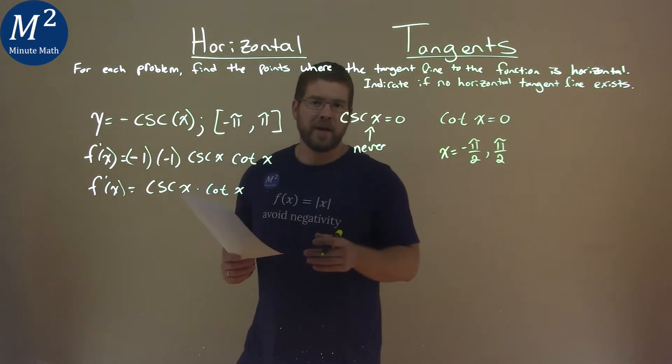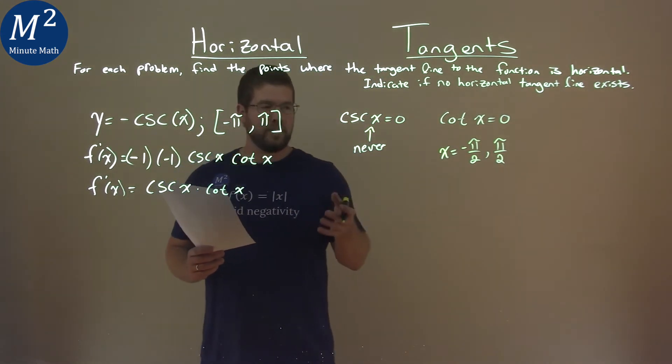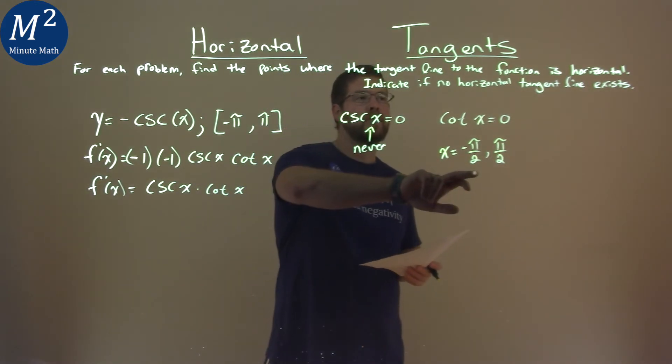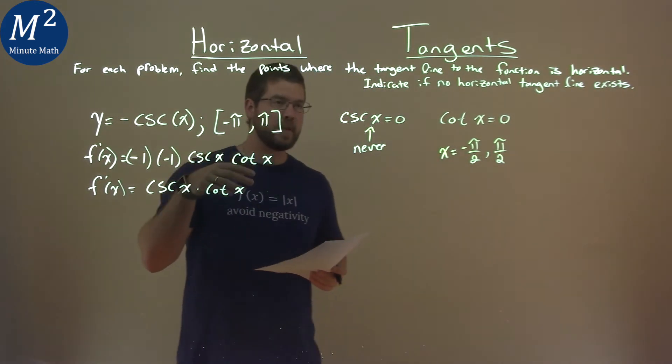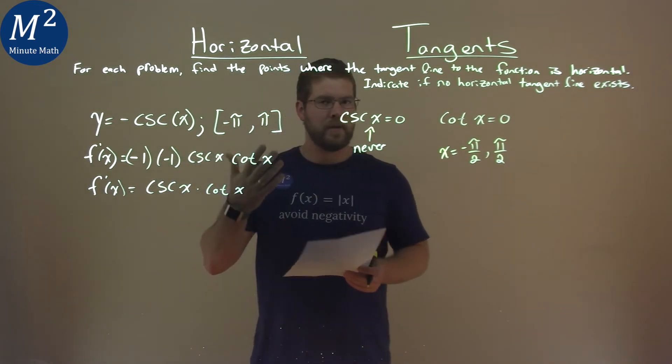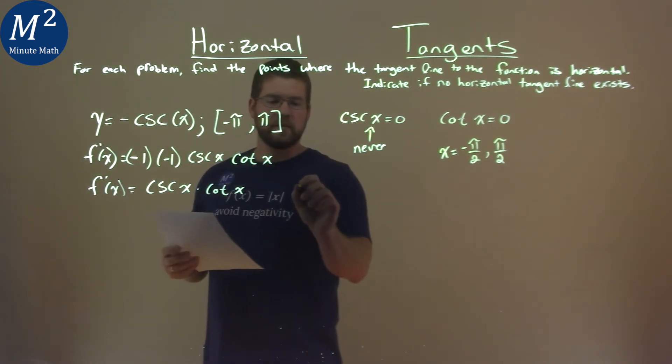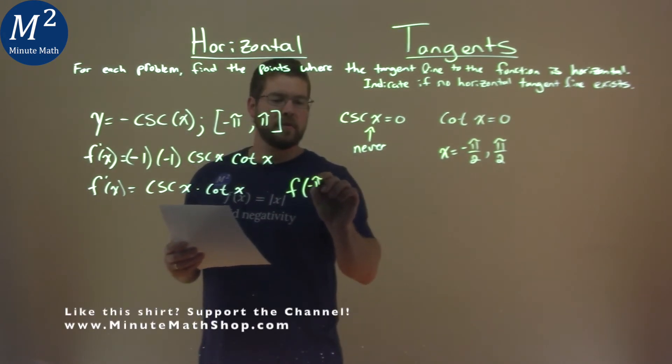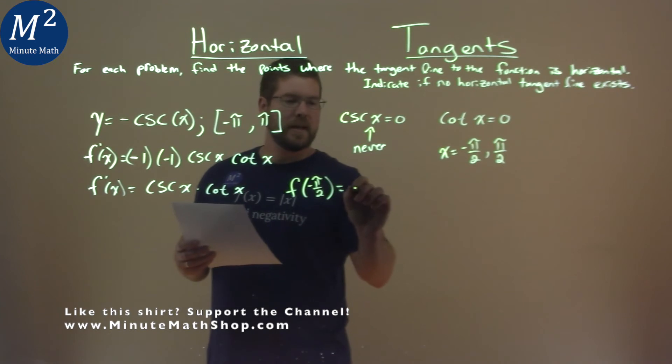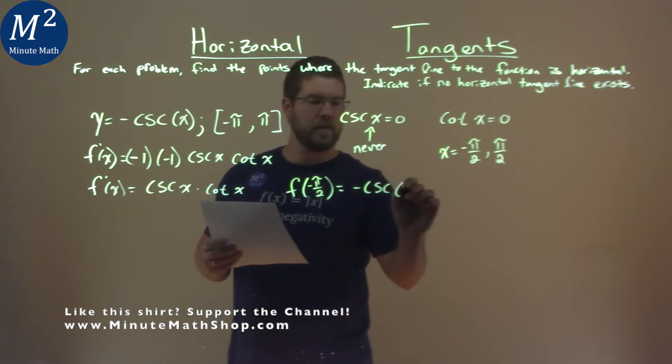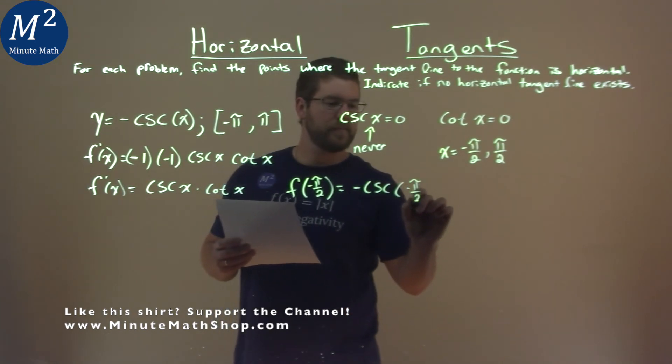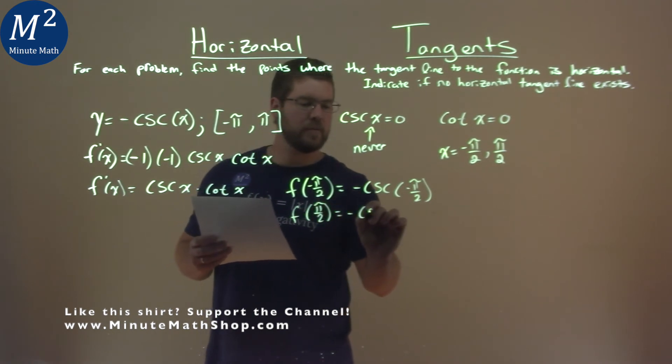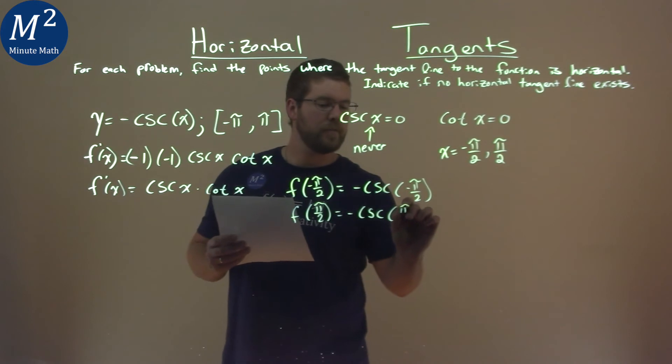So what we're going to do now is find the y values of those x values there. Because remember, these x values are where the tangent line is horizontal, and we want the coordinate points. We need to find the y value. So we use our original function up here, and let's do negative pi over 2 first: f of negative pi over 2 is negative cosecant of negative pi over 2. We're going to do the same thing with pi over 2: f of pi over 2 is negative cosecant of pi over 2.